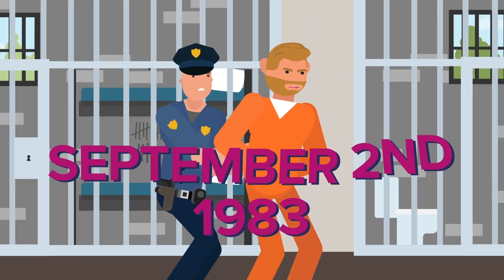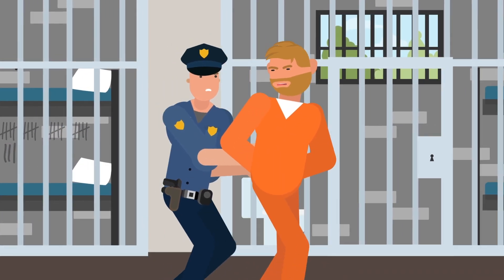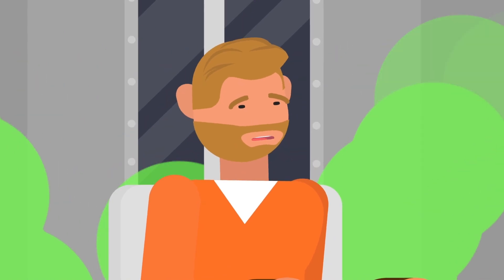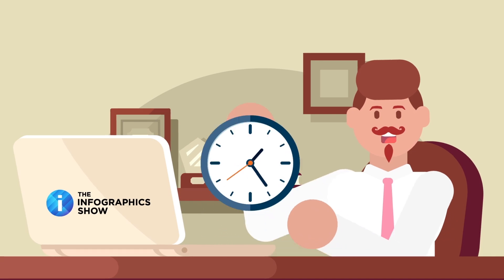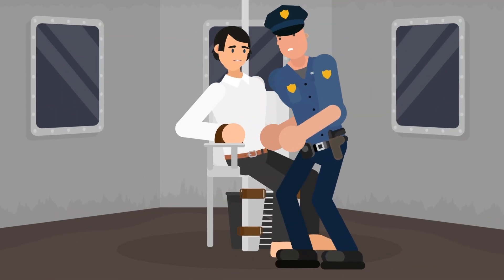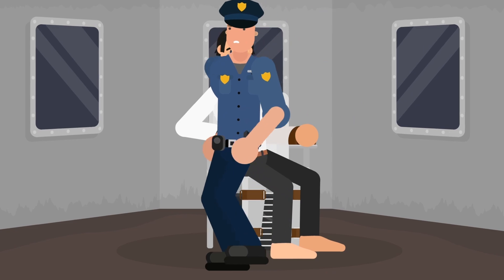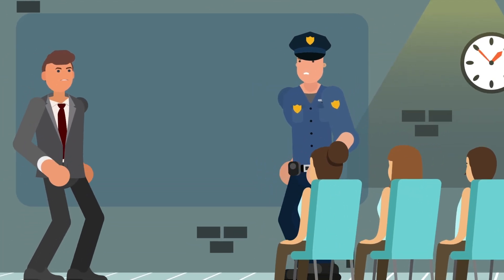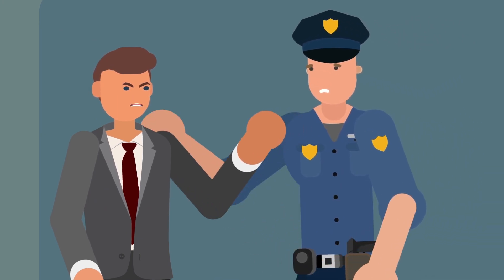Inmates would be seen drooling and moaning long after they should have been unconscious. On September 2nd, 1983, Jimmy Lee Gray was executed by lethal gas, and after eight minutes of moaning and banging his head against a pipe, the viewing room was cleared by prison officials. It's unknown just how long it took for him to actually die. In 1960, Carl Chessman told reporters he would nod his head if he felt pain during the execution. Chessman would nod his head for several minutes as he moaned behind the thick glass, until at last falling unconscious.